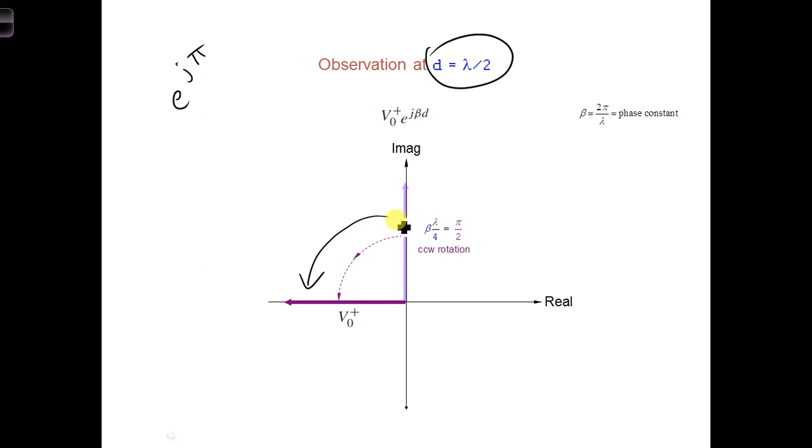And as we move even further away from the load, you'll notice that we'll keep spinning around the complex plane, and you might notice that it starts to repeat itself. It's going around the exact same way, which we would expect from a sinusoidal signal which repeats itself.